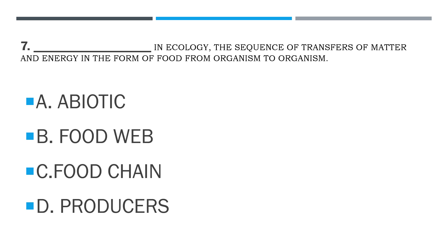Number 7. Blank: in ecology, the sequence of transfers of matter and energy in the form of food from organism to organism to organism. A. Abiotic. B. Food Web. C. Food Chain. D. Producers.